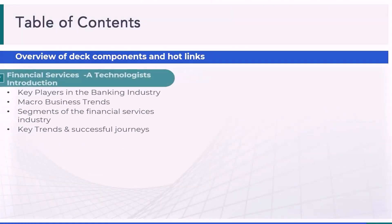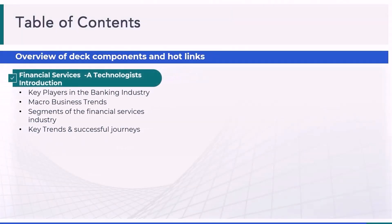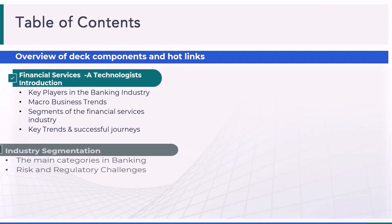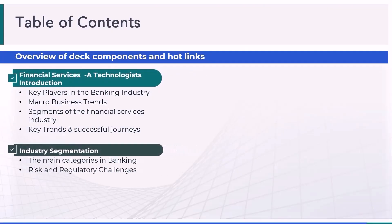Let's talk about module one now. In module one, the first thing we'll do is understand the key players in the financial service industry. We'll understand the macro business trends, the different segments that make up the industry, and how to basically think through the industry in terms of the constituent segments.